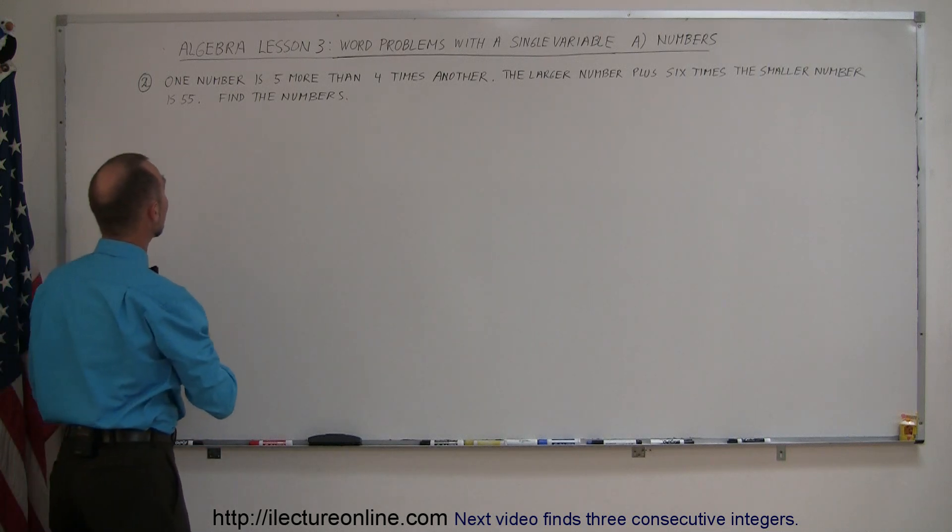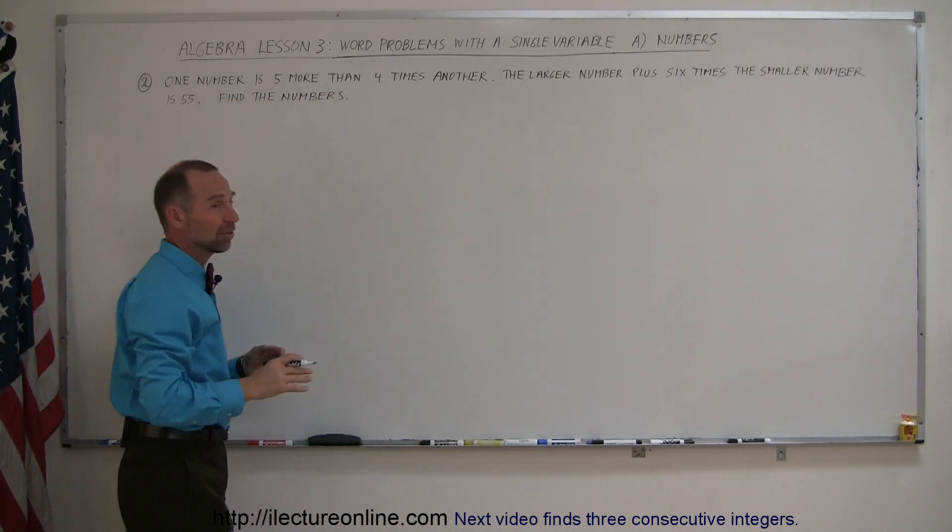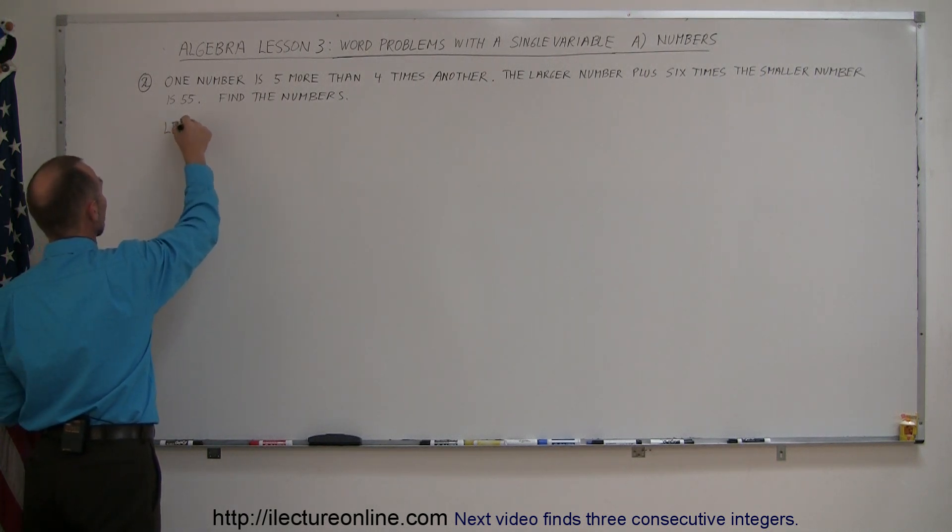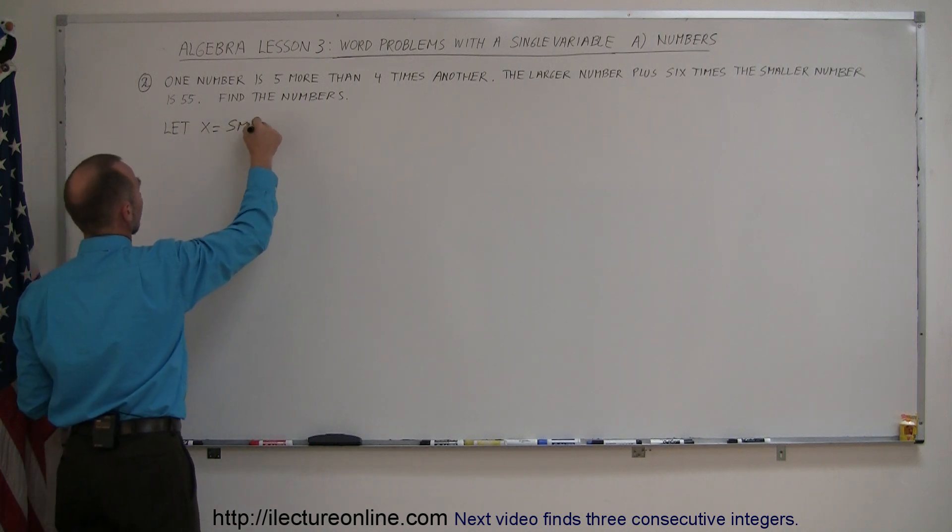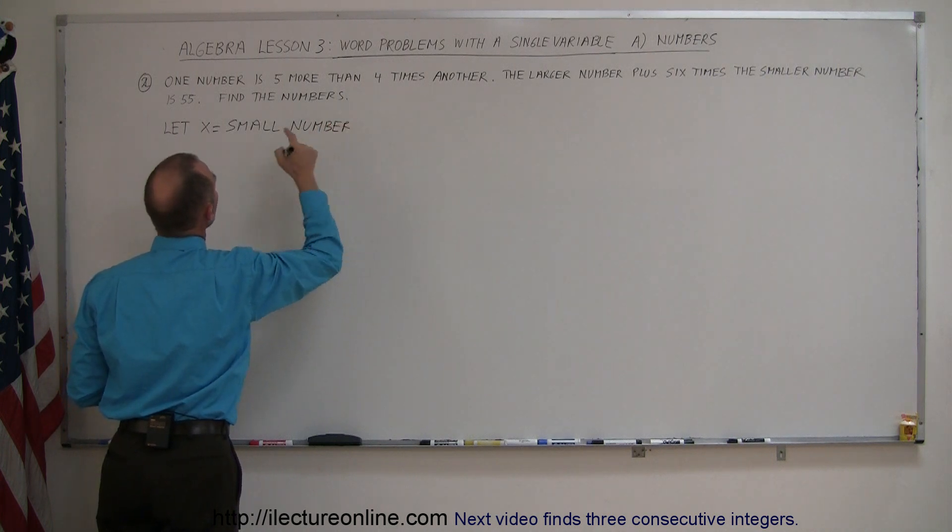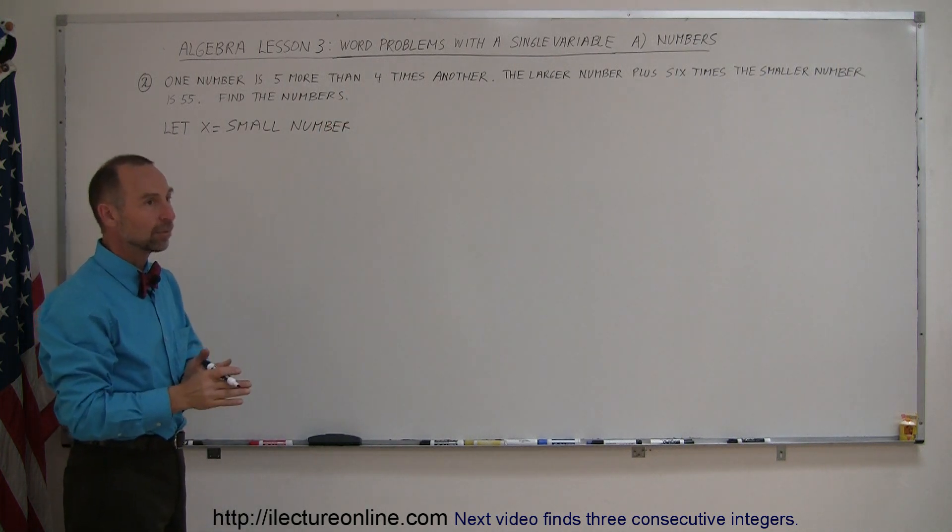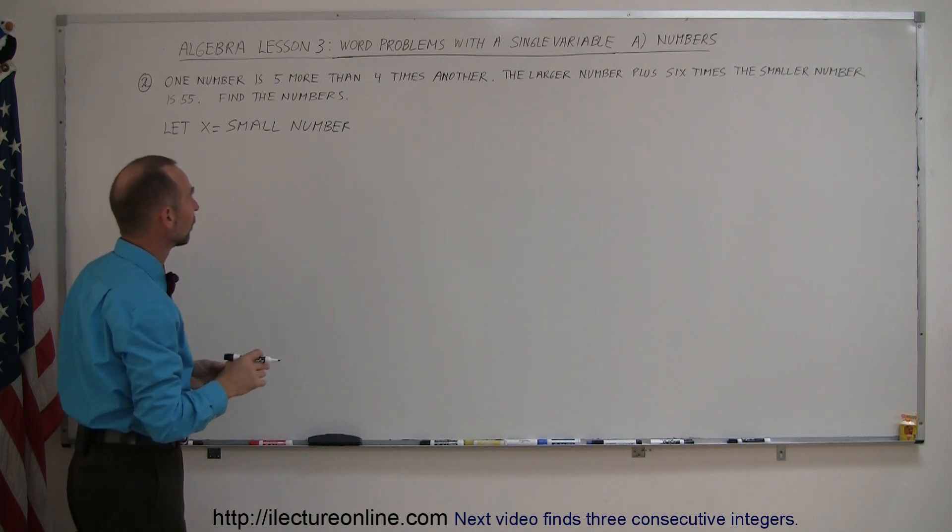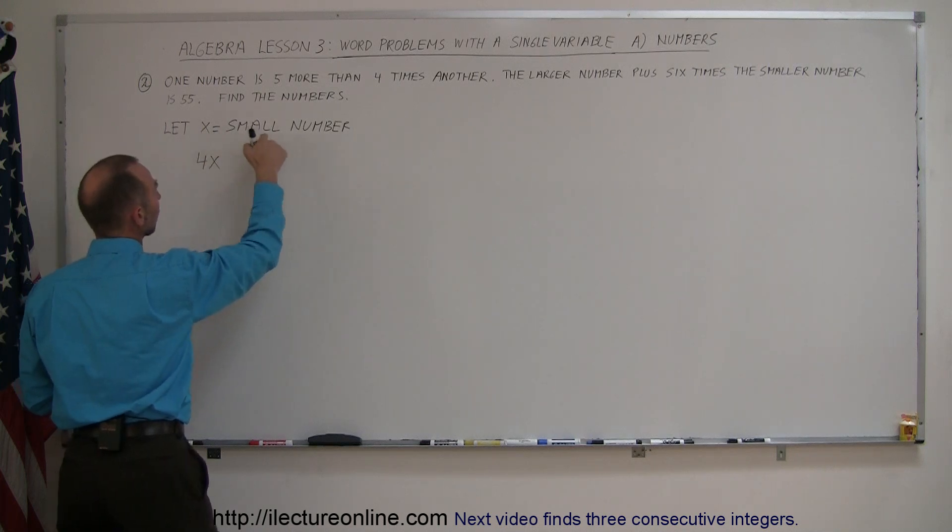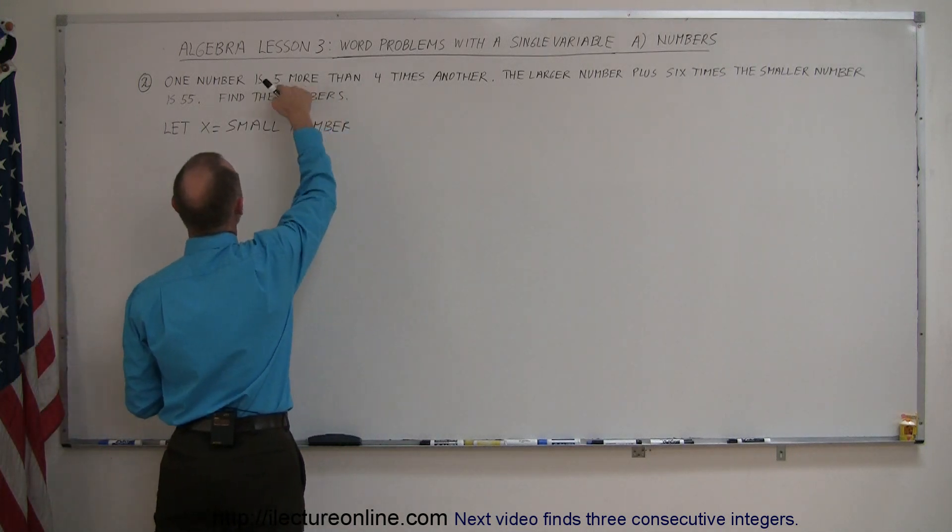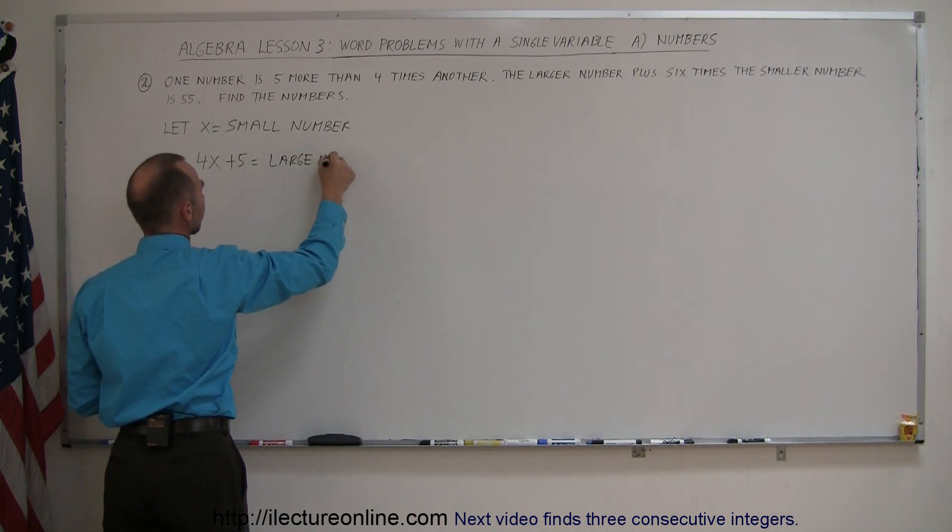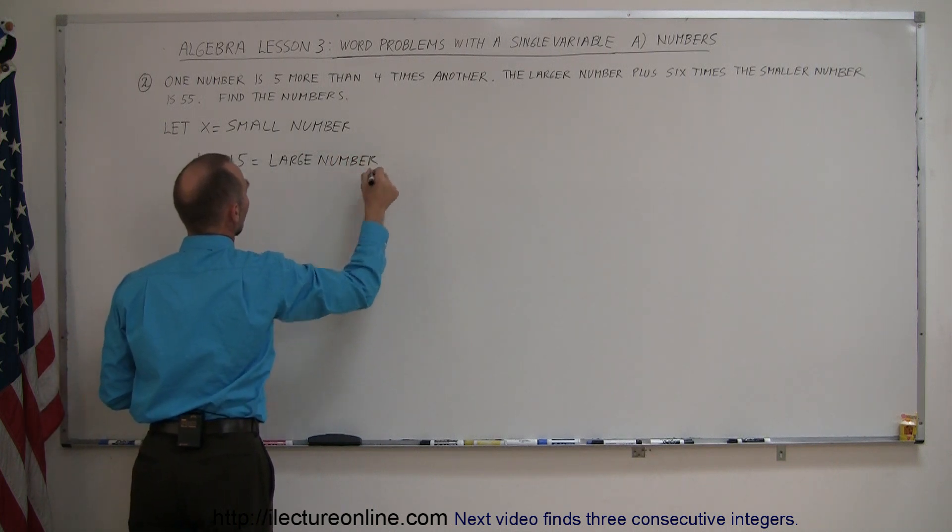So again, starting out, one number is five more than four times the other. That means the other is a small number, and that's the large number, so let x equal the small number. And then the large number, according to the problem, is five more than four times the small number. So let four times x—four times the small number—plus five. That must equal, then, the large number.